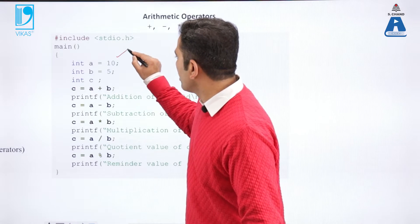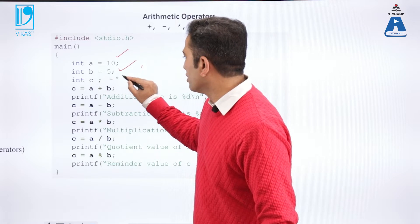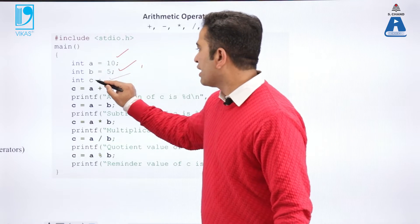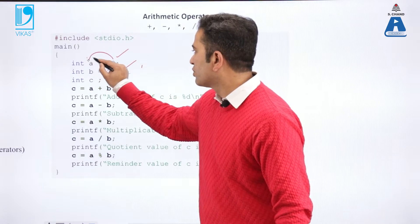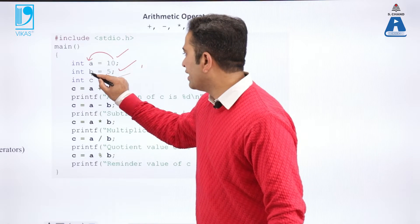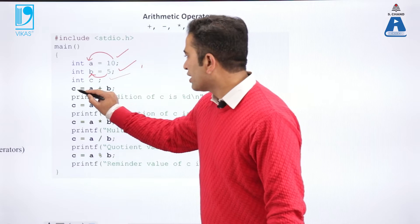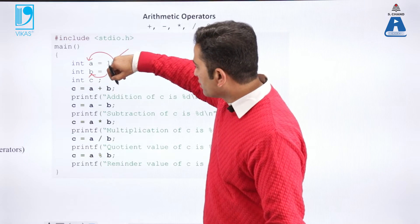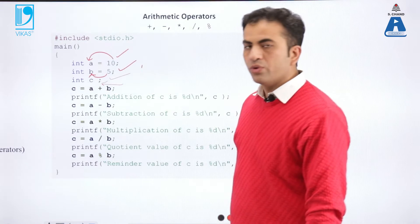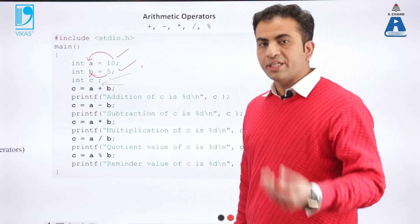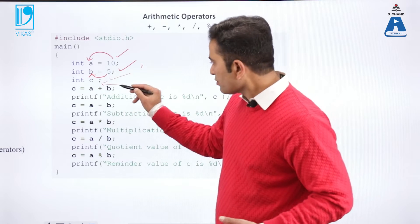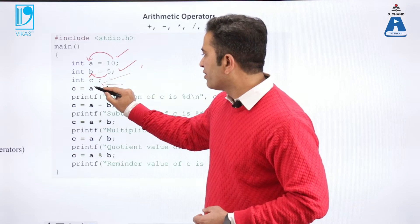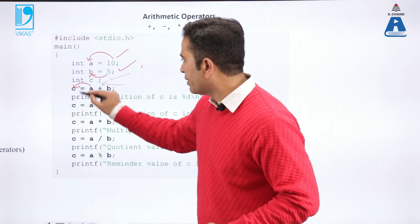We have: int a equal to 10, b equal to 5, and c. These are the declarations of 3 variables a, b, and c, where 10 is assigned to variable a and 5 is assigned to variable b. The first arithmetic operator we use is c equal to a plus b. When the program starts solving this, it works from right to left — that is called associativity. So a plus b is 5 plus 10, which is 15, and that 15 will be assigned to variable c.